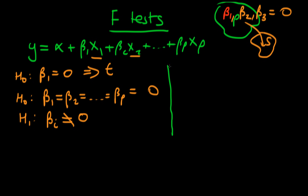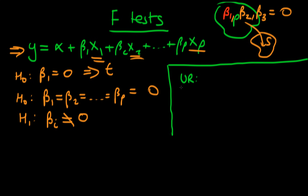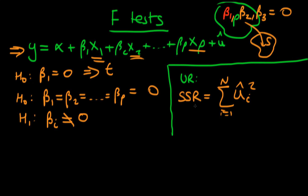How do we test this in the multiple hypothesis situation? We start by considering what we call the unrestricted regression — which is just the full regression including all the variables, all the x's we're interested in testing. From that regression we get something called the sum of squared residuals. From this regression we get an estimate of the population error — the residuals — and we square those residuals and add them all up. If our model is fitting the data really well, the sum of squared residuals will be quite low.